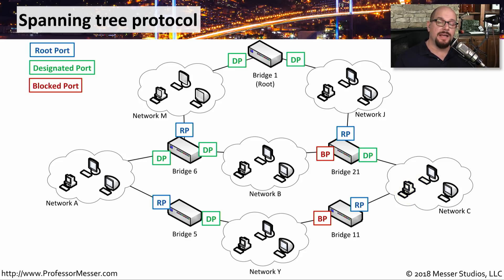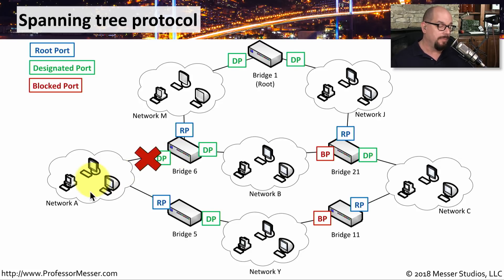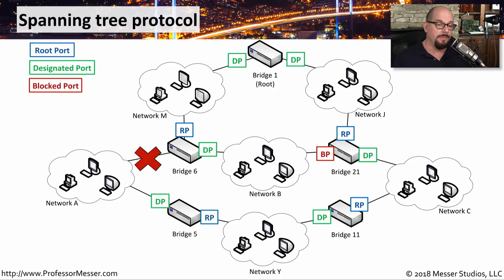Very often on a network of this size, we might have some type of change — a switch may fail, or one of the links between switches may become disconnected. When that occurs, Spanning Tree has to converge the network and restructure which devices are connected. For example, if the connection between network A and bridge 6 is severed, Spanning Tree will reconfigure itself by sending messages between all of the different bridges and reconfigure the links so that communication can exist through other parts of the network while still maintaining a loop-free environment.